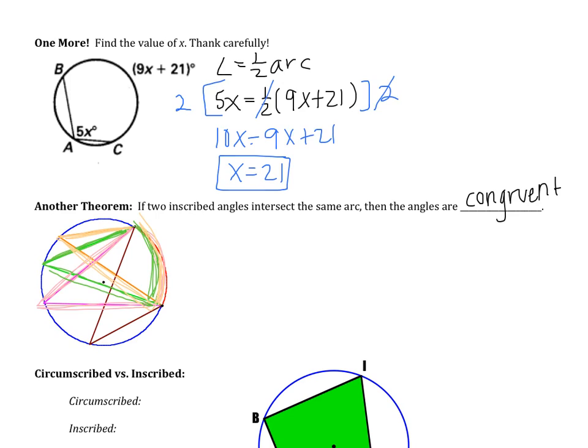So the pink angle, the green angle, the orange angle, the brown angle, they're all congruent. They all intercept the same arc.